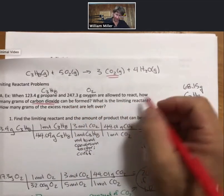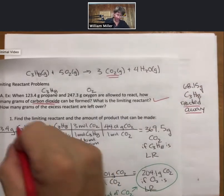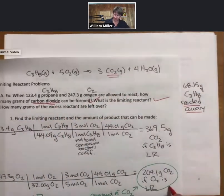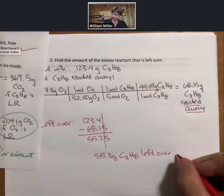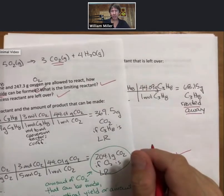And as we always, always come back to the question. What is the limiting reactant? Oxygen. How many grams of carbon dioxide can be formed? Right here. How many grams of the excess reactant are left over? We have answered this question.